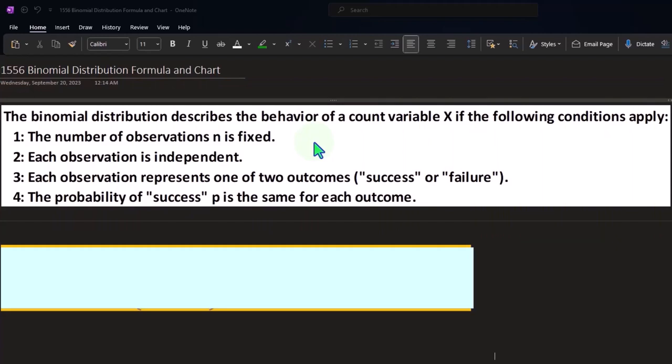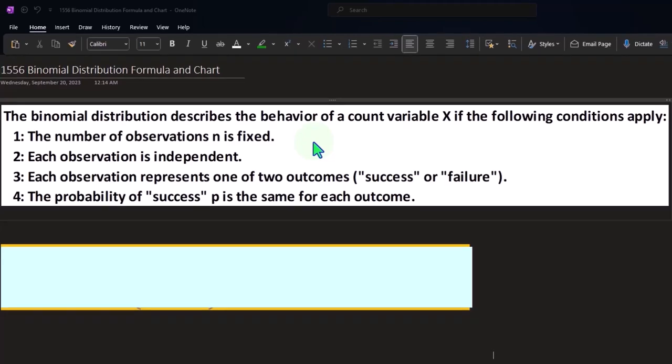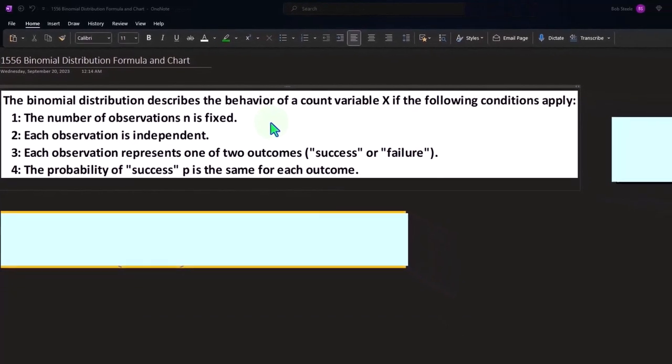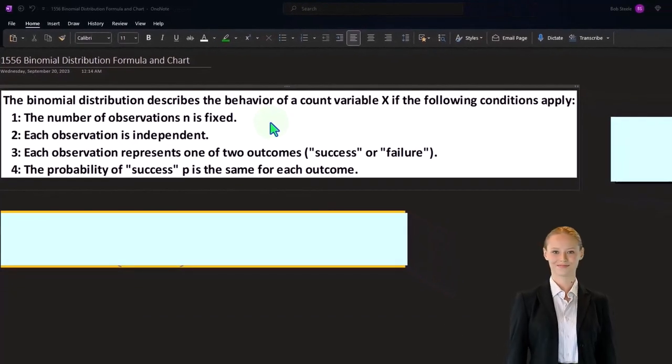A common example is like a sales call type of situation when we're looking at business examples. So in a sales call situation, for example, you're going to have a fixed number of calls and each call that you're going to be making is going to have either one of two outcomes, a success, a sale, or a non-success, a non-sale. So I'll use that as my example as we think about these conditions.